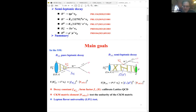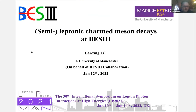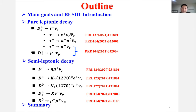The next talk is given by Langxing Li from the University of Manchester, on semileptonic charm meson decays at BESIII. The talk covers the main goals and introduction of the BESIII detector, purely leptonic decays, semileptonic decays, and a summary. In the purely or semileptonic decay, the strong and weak interactions can be cleanly separated since the leptons don't participate in the strong interaction, providing a perfect platform to explain this process in theory.